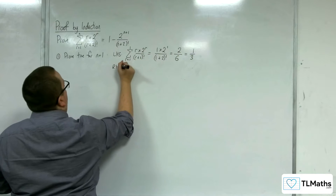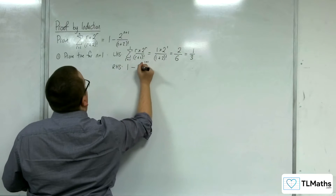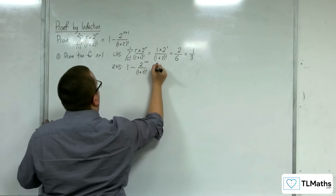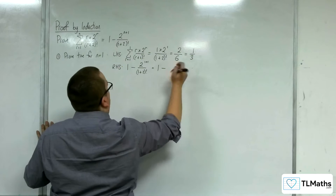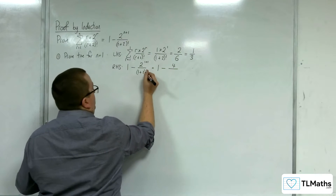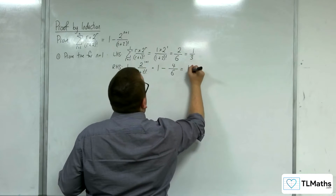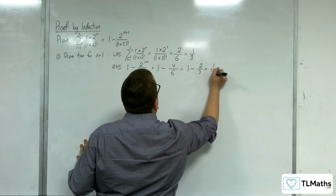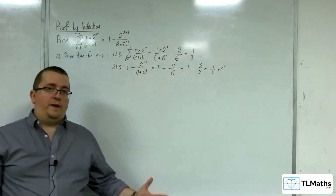The right-hand side, we would have 1 minus 2 to the 1 plus 1 over (1 plus 2) factorial. So, 1 minus 2 squared, which is 4, over (1 plus 2) factorial. 1 plus 2 is 3, and 3 factorial is 6, so that's 1 minus 2 thirds, which is 1 third — the same as the left-hand side. So it is true for n equals 1.